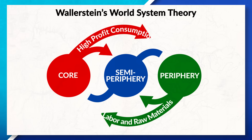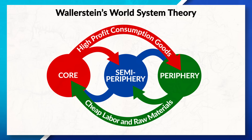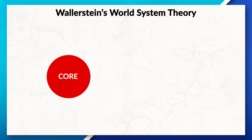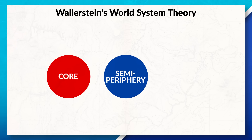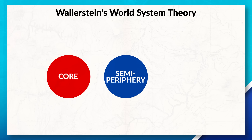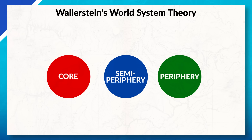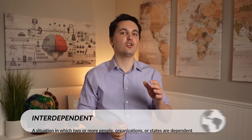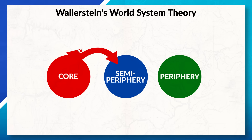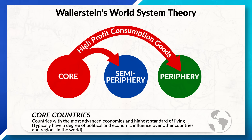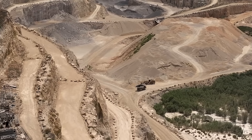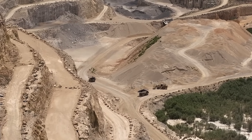We can see this imbalance of power in global trade when looking at Wallerstein's world system theory. The theory breaks countries down into three main categories: core countries, which are the most economically developed; semi-periphery countries, which consist of countries with emerging economies that are not quite at the same level as core countries but also further along than periphery countries; and lastly, periphery countries, which are the least economically developed and often have the lowest standard of living. Core countries hold the dominant power and control the global economy, and they are also the ones most likely to exploit the resources of semi-periphery and periphery countries.